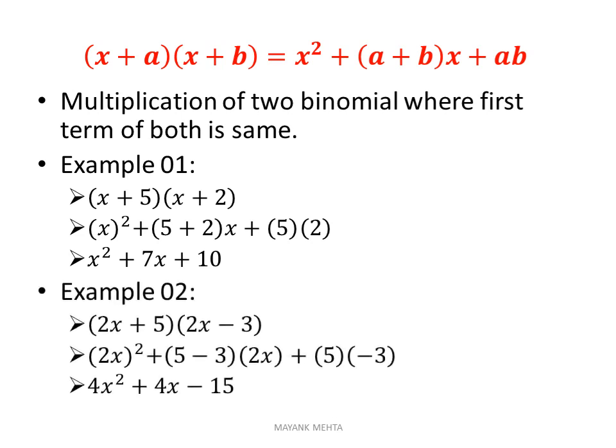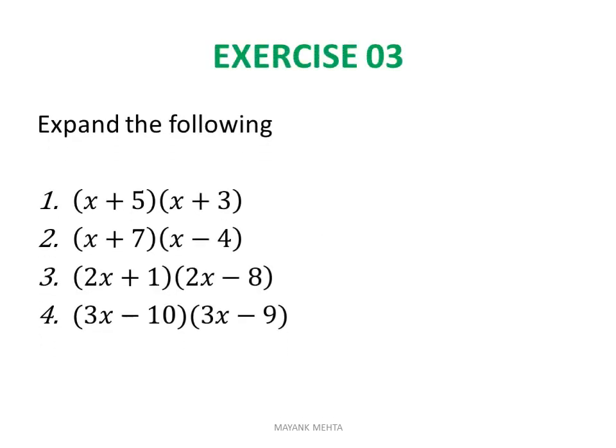For example, (2x+5)(2x−3): the square of the first term — here the first term is 2x, not x, so you square 2x. Then the sum of the two last terms: 5 and −3, which gives 5−3 = 2, multiplied by the first term 2x. Then the product of both last terms: 5 × (−3) = −15. The simplified answer is 4x² + 4x − 15.